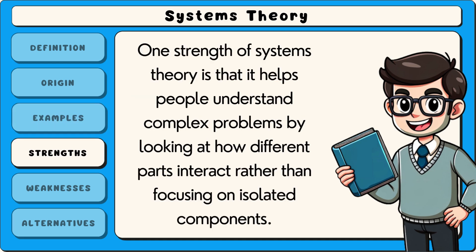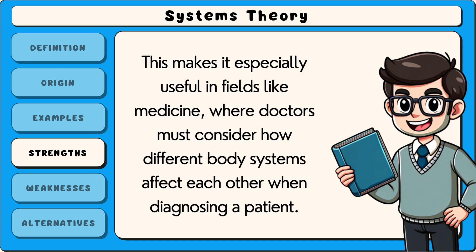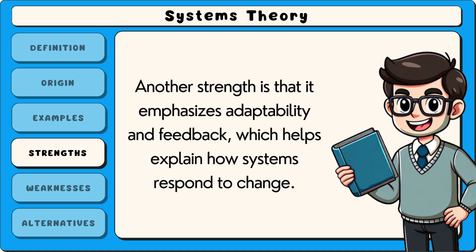One strength of systems theory is that it helps people understand complex problems by looking at how different parts interact, rather than focusing on isolated components. This makes it especially useful in fields like medicine, where doctors must consider how different body systems affect each other when diagnosing a patient. Another strength is that it emphasises adaptability and feedback, which helps explain how systems respond to change.